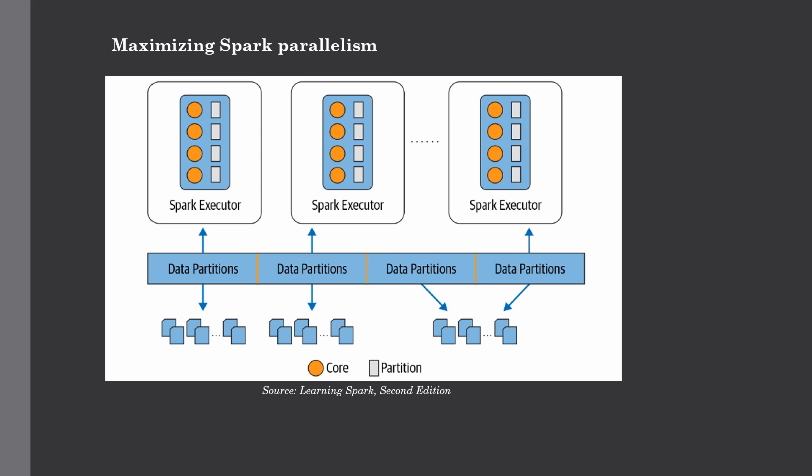Decreasing the partition size may result in the small file problem — a well-known issue in the big data community. This means many small partition files, introducing an inordinate amount of disk I/O and performance degradation due to file system operations like closing, opening, and listing directories, which on a distributed file system can be very slow. Partitions are also created when you explicitly use certain methods on a DataFrame. When creating a large DataFrame or reading a large file from disk, you can explicitly instruct Spark to create a certain number of partitions. Techniques like caching and persisting DataFrames can also help optimize Spark further.